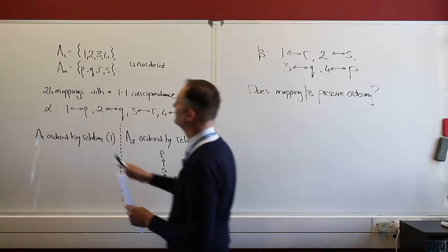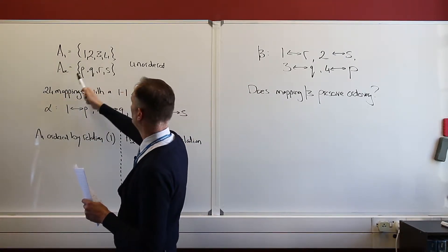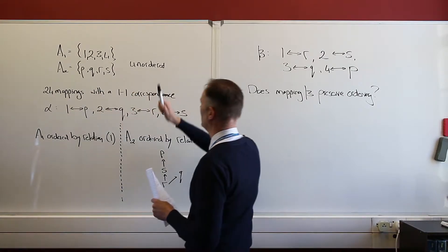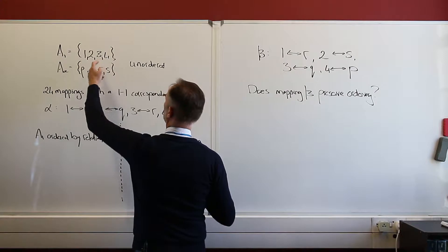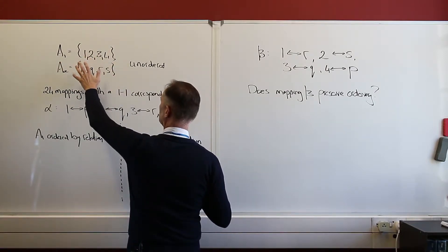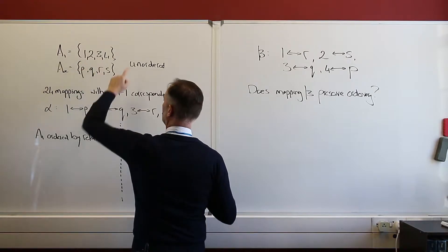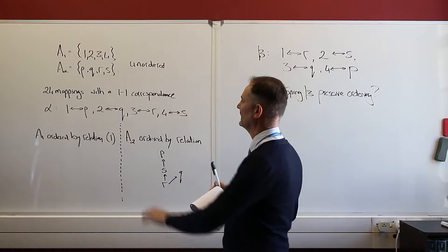I've got two sets on the board here. I've got my set A1 and A2. A1 has four elements. A2 has four elements. And they are unordered. In other words, it might have been 2, 4, 1, 3, or 4, 3, 2, 1. And the same with these. There's no particular ordering, just because it's alphabetical and in order of the natural numbers, don't read anything into that. They are unordered.